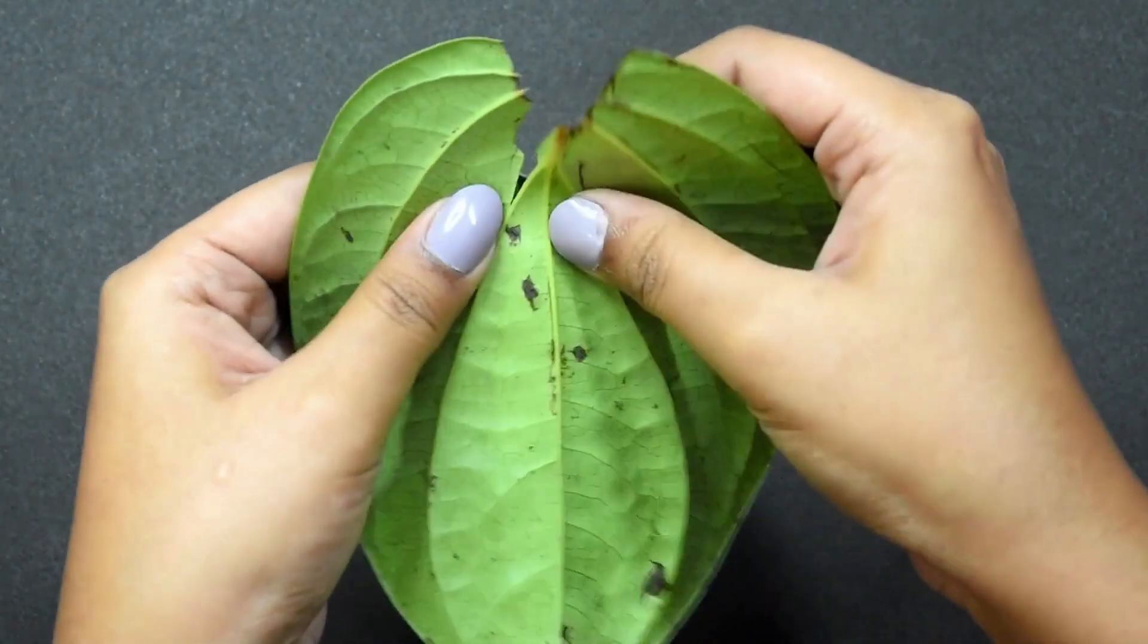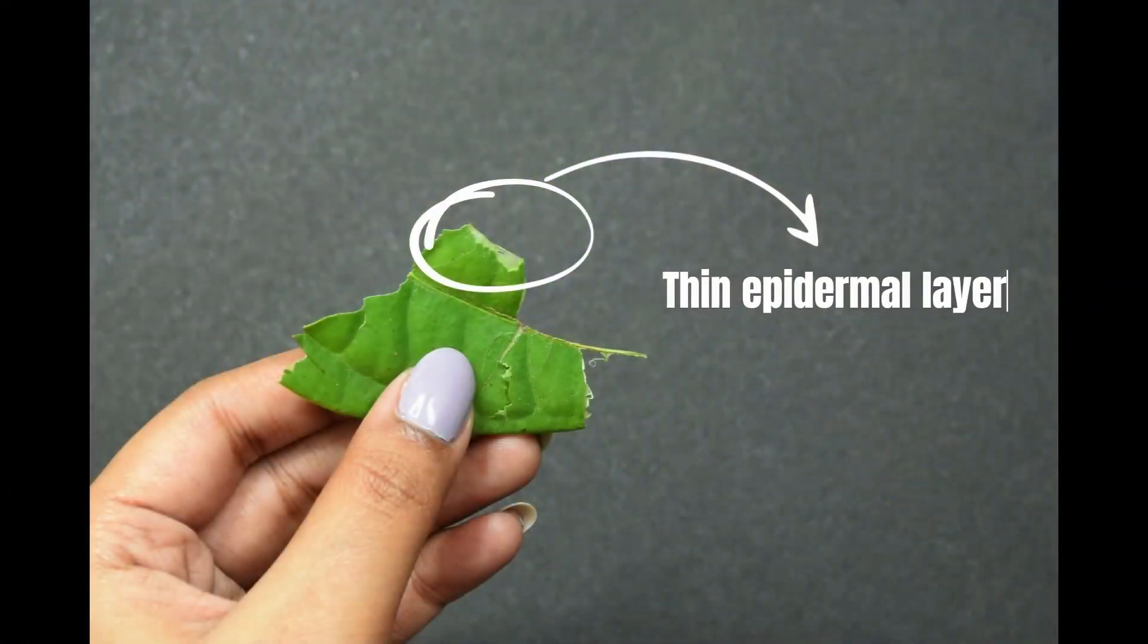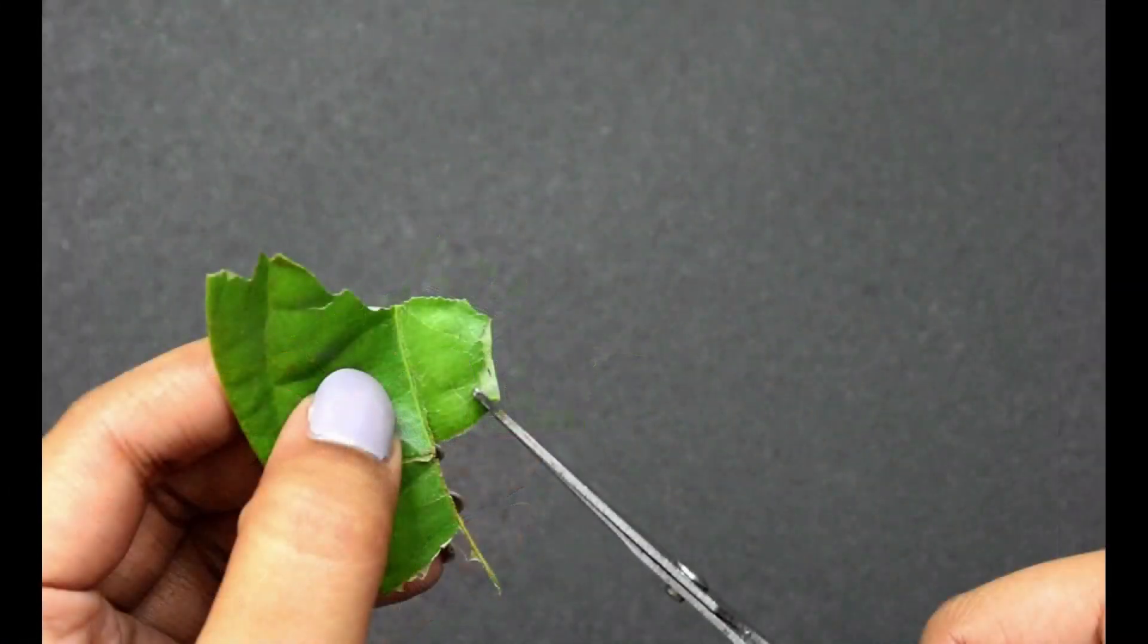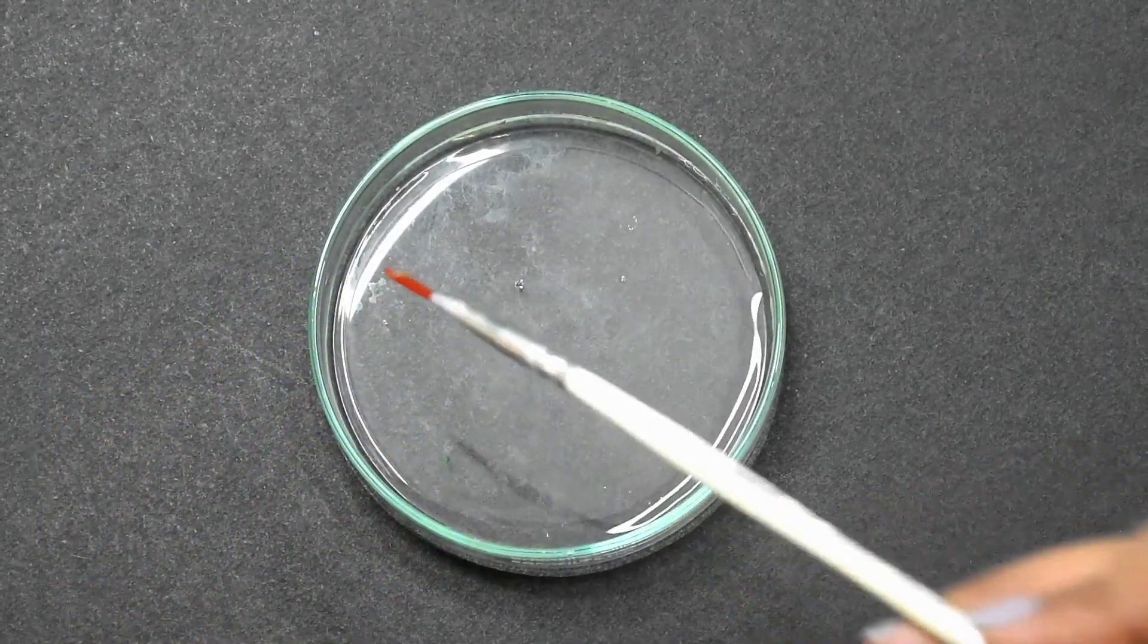First, we will pick a healthy leaf and try to separate a thin section of epidermal layer from the leaf. Once the thin layer is separated, we will cut the section and carefully transfer it to a petri dish containing water.